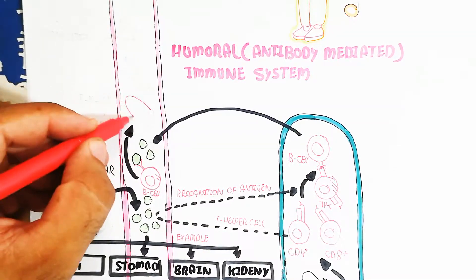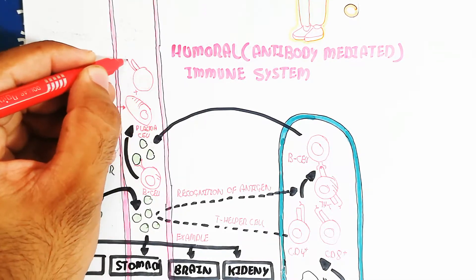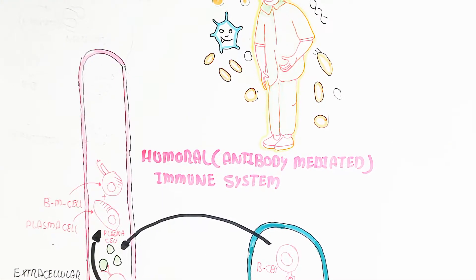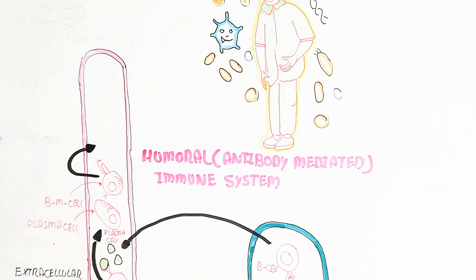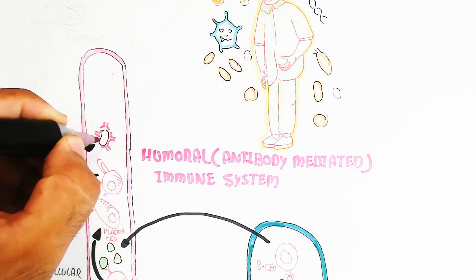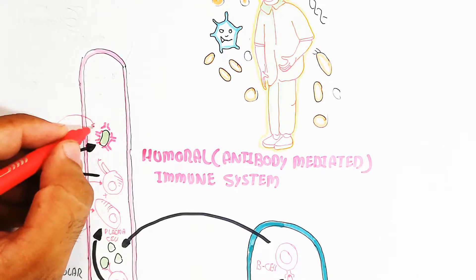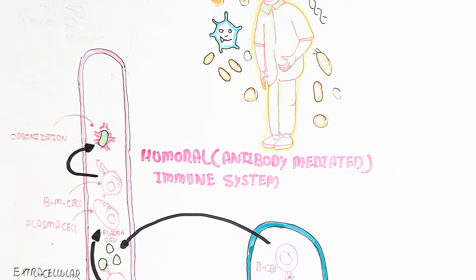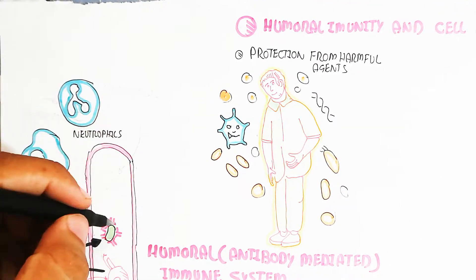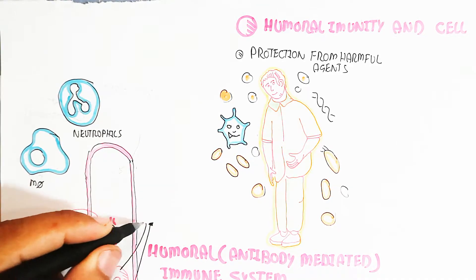After activation, the B cell detects the antigen from the circulatory system and proliferates into plasma cells as well as B memory cells. B memory cells are used for a quick response upon re-infection, while plasma cells produce cytokines and antibodies. These antibodies bind to the antigen to form an opsonized complex — a process known as opsonization.